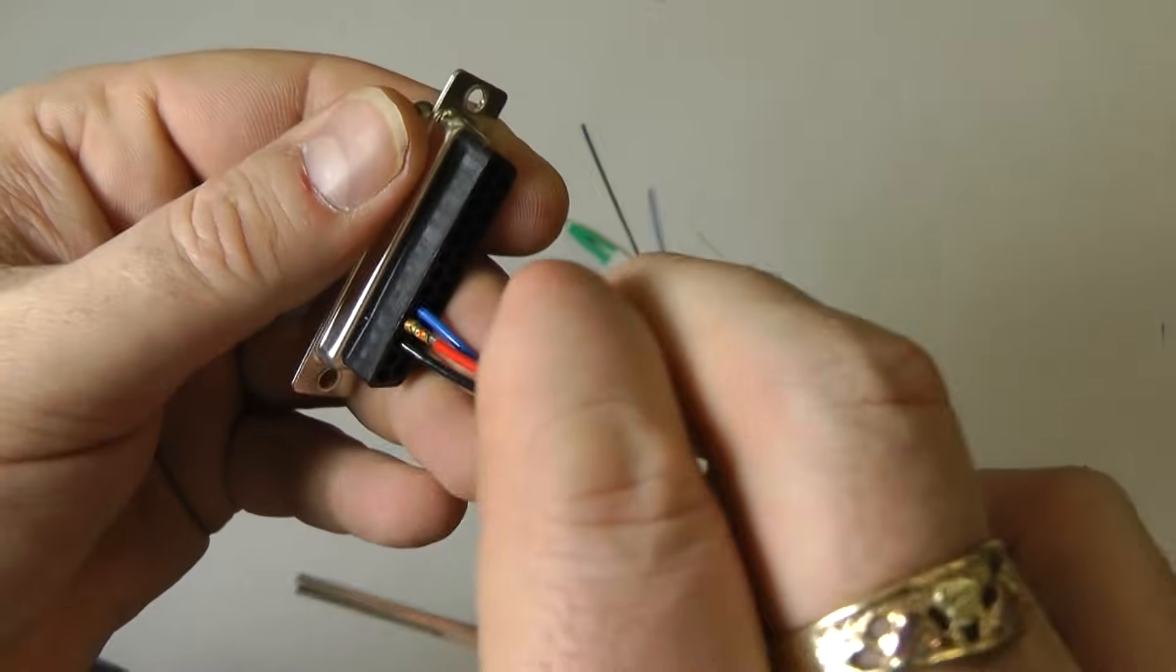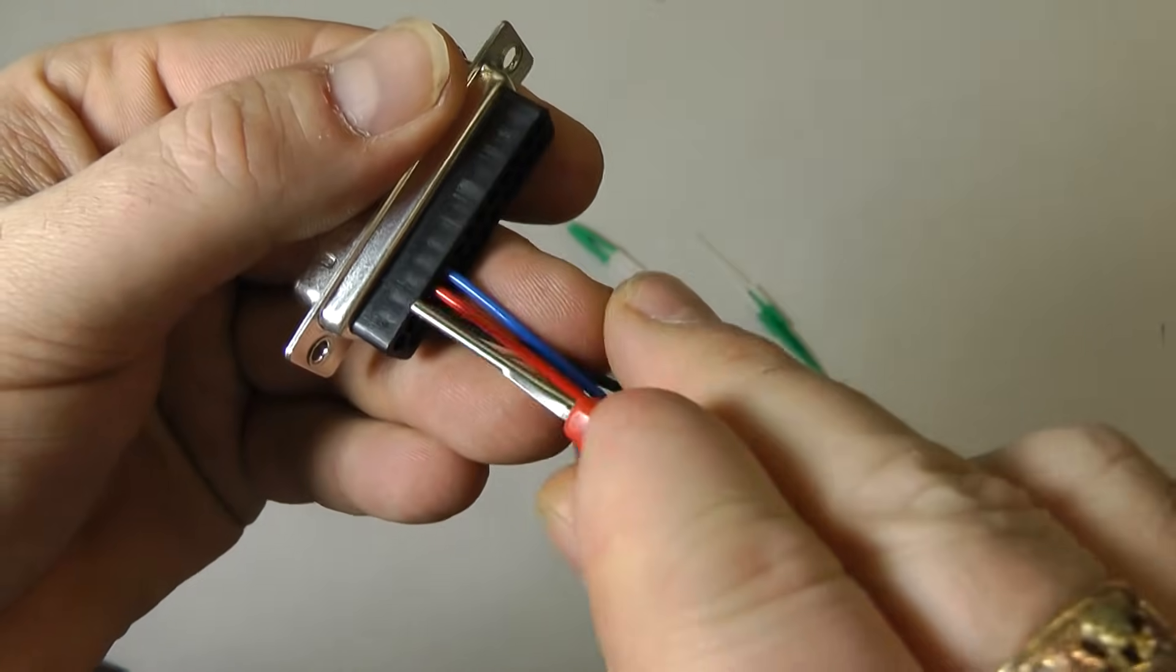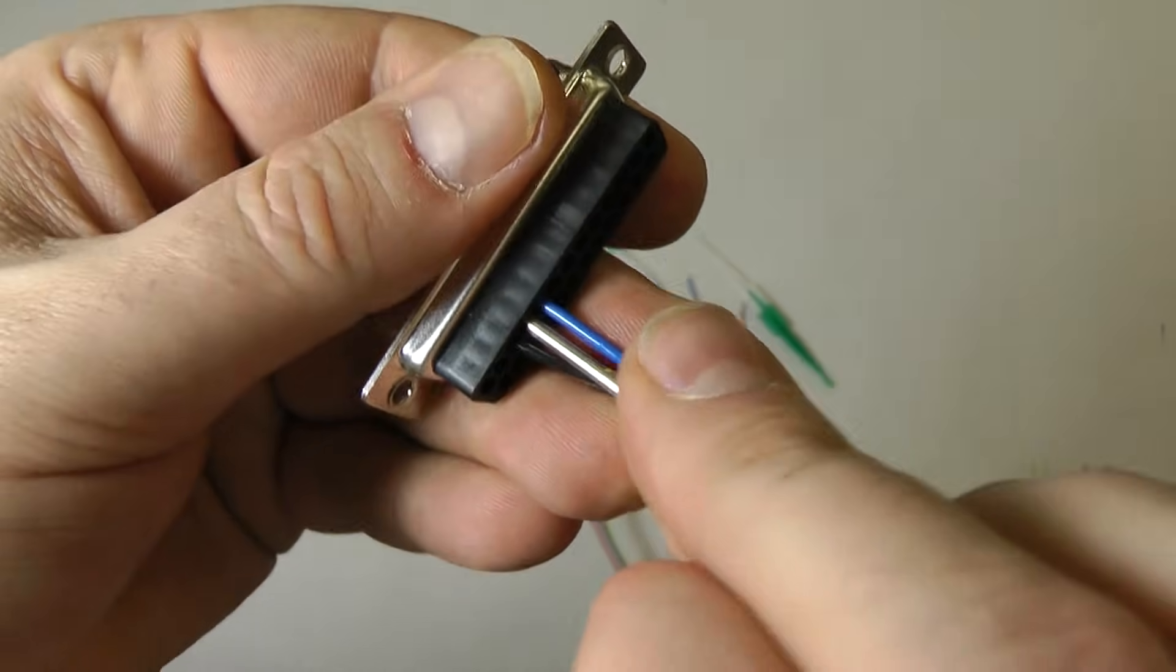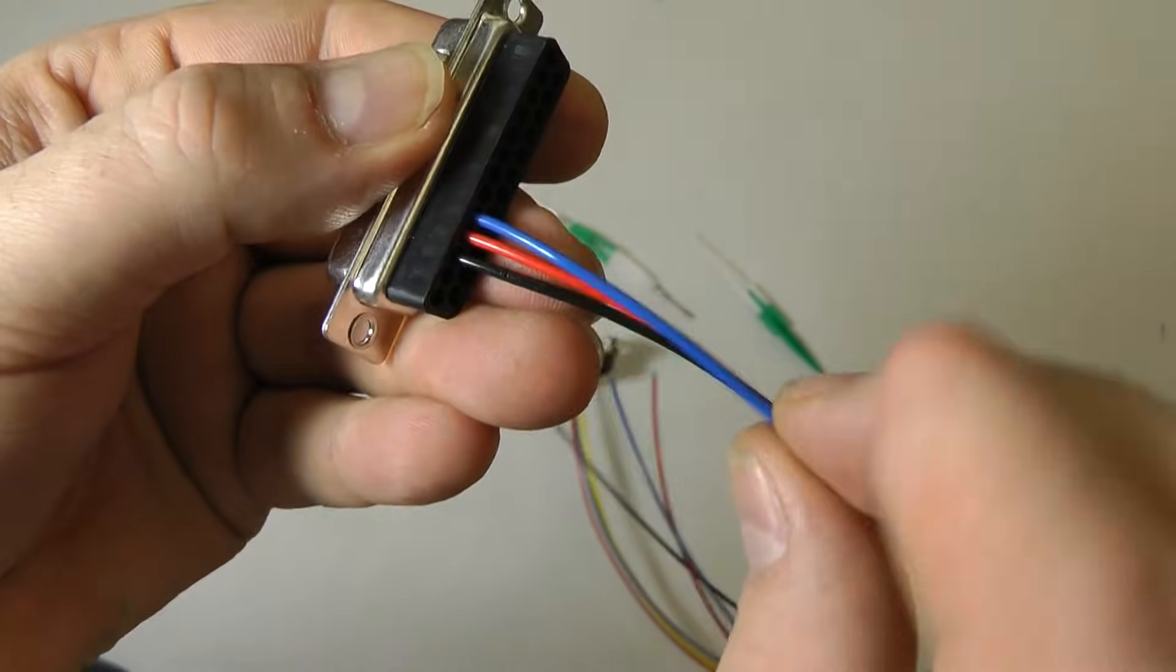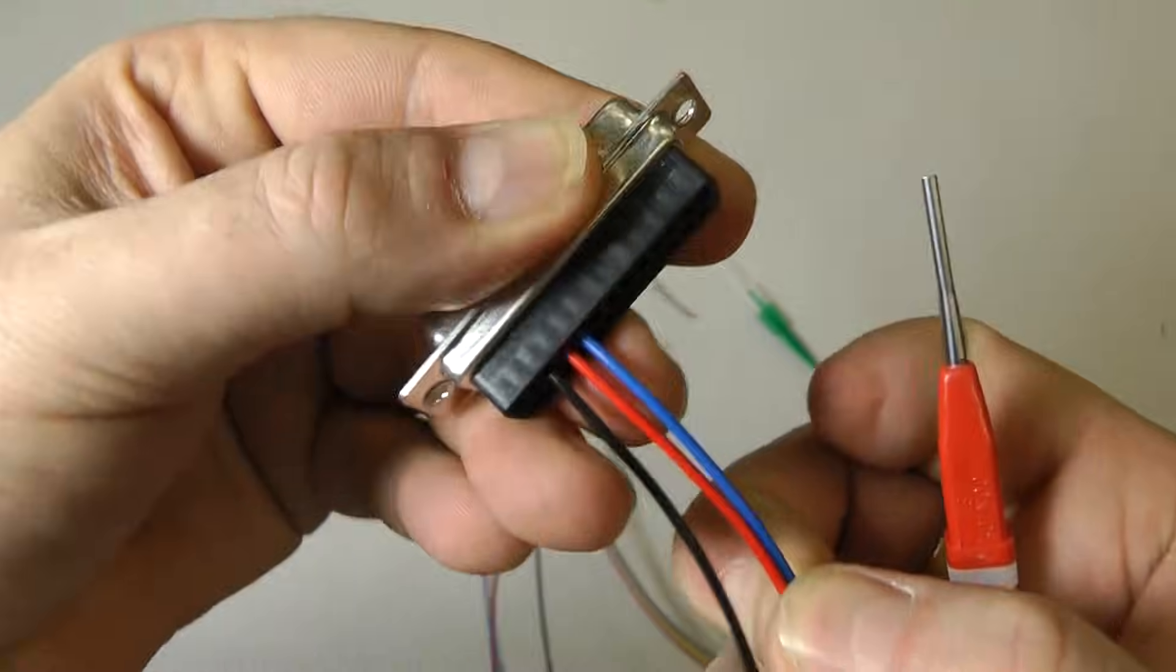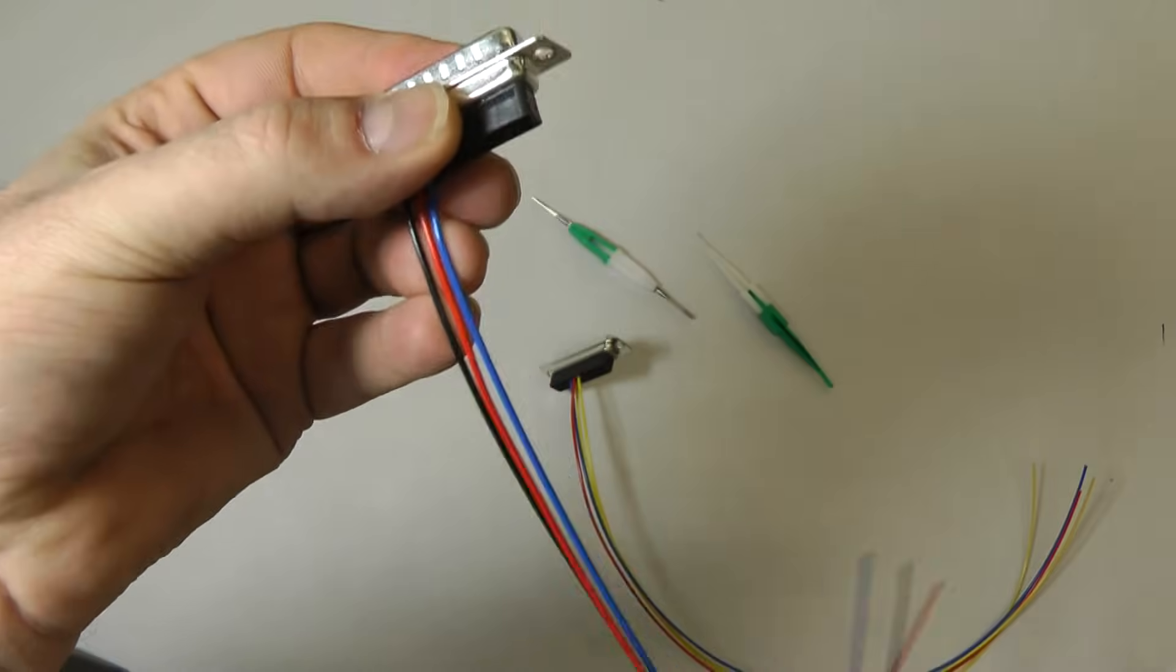If we want to reinsert it, put it back into the hole, use the red side of the tool, push it back in there until we hear it click, and then we're secured back in the connector again. That's how we remove and insert pins in D-Sub connectors.